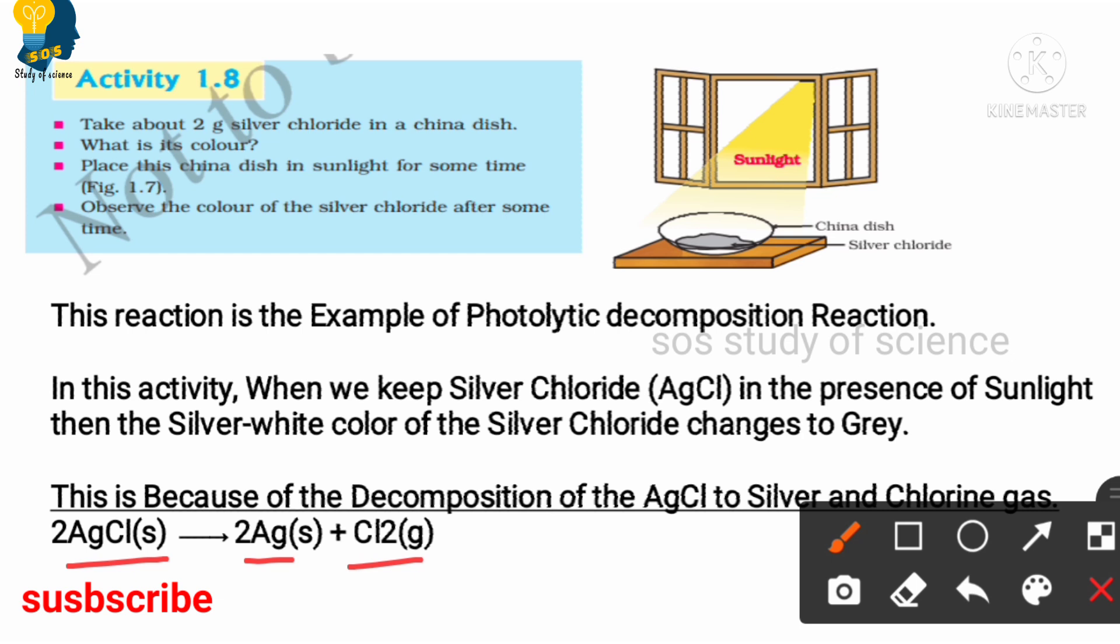It is very important to write the balanced equations in the examination. So now, what happens to the color of silver chloride when we keep it under the sunlight? As we are keeping the silver chloride under the sunlight, the silver white color silver chloride will change its color to gray. Very importantly, you have to note down the change in the color also. Let us now look at some of the expected questions from this particular activity.